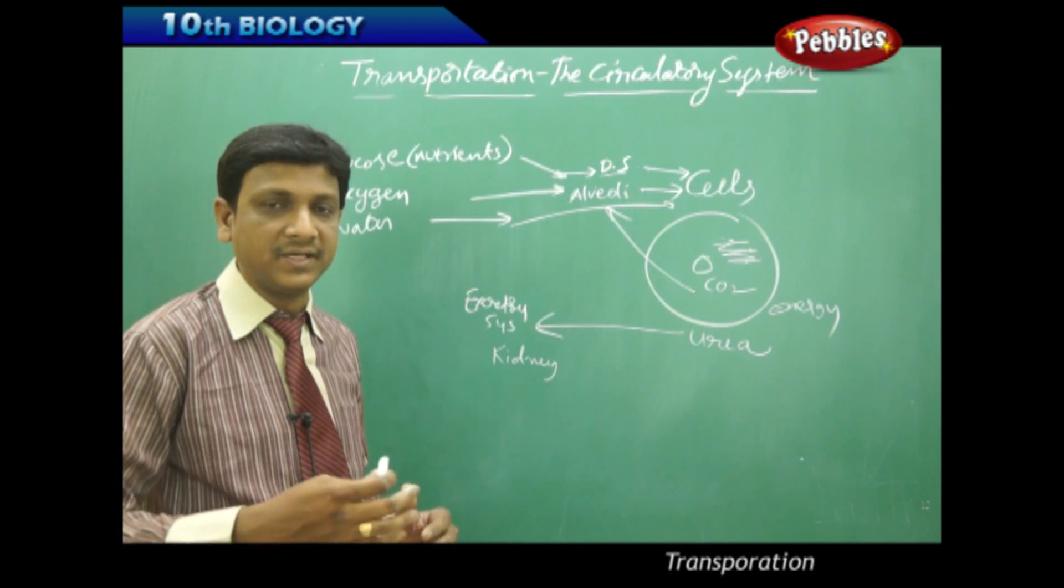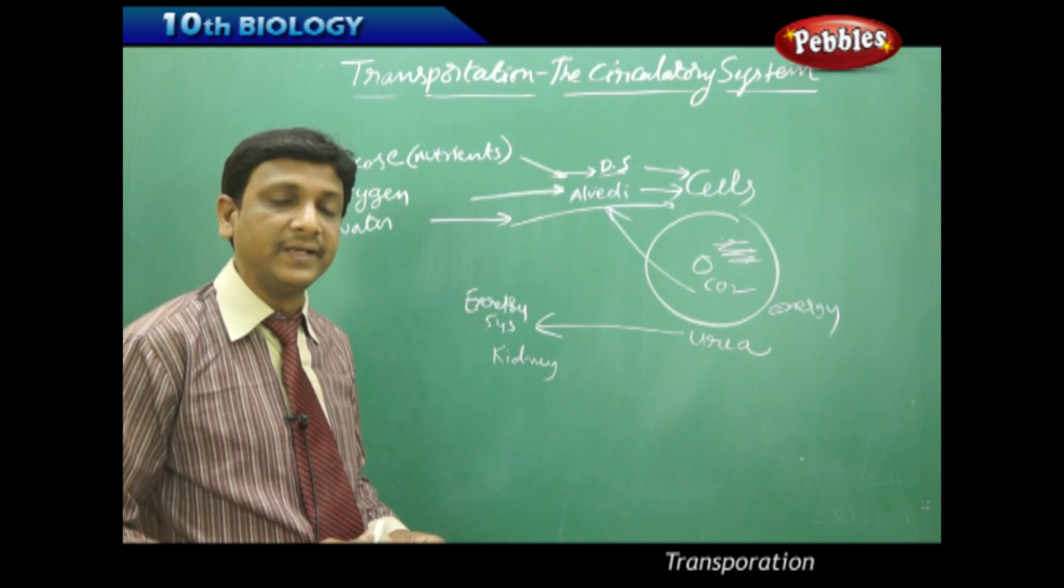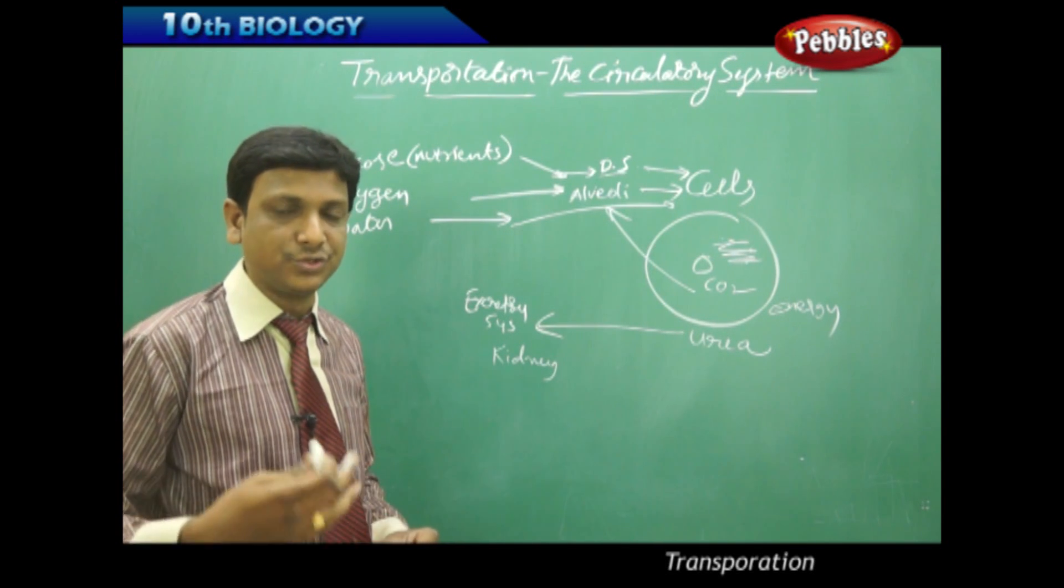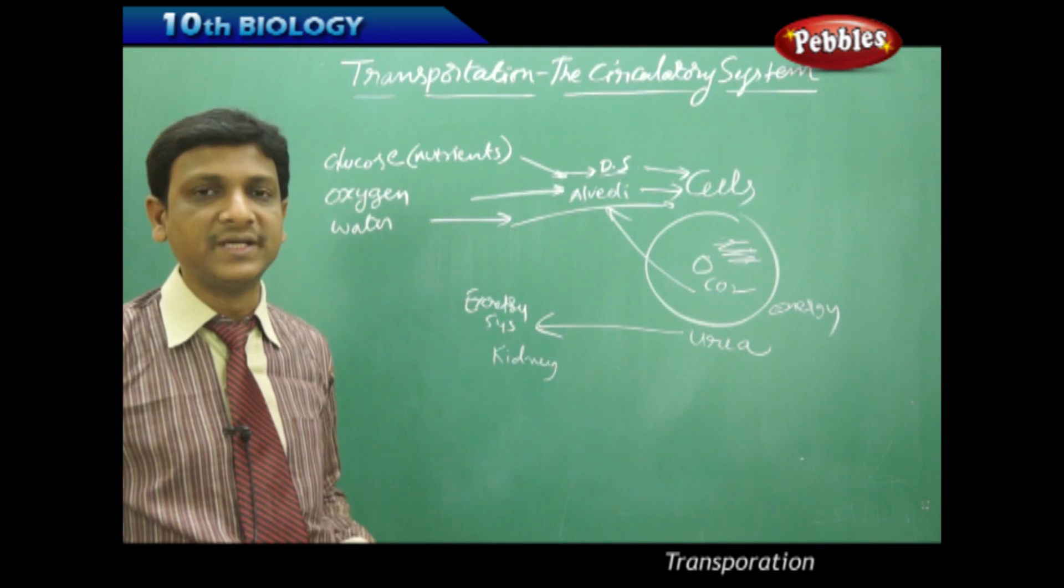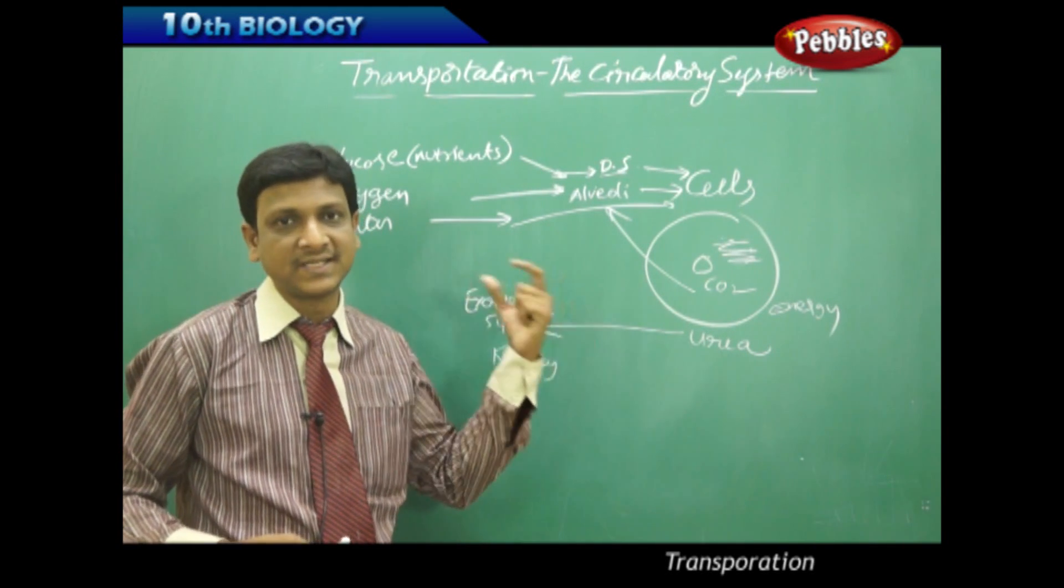The circulatory system supplies the nutrients, oxygen and other things to the cells. It helps in the process of generation of energy. And after that, during cell activities, whatever waste materials are produced, all these waste materials are carried to the excretory organs, respective excretory organs, for excretion.